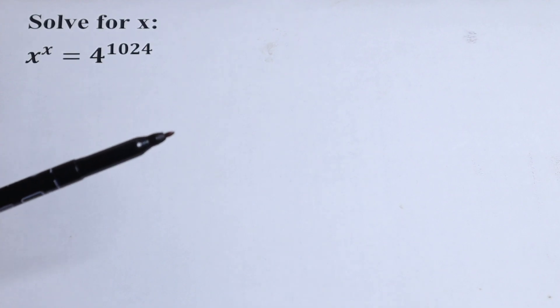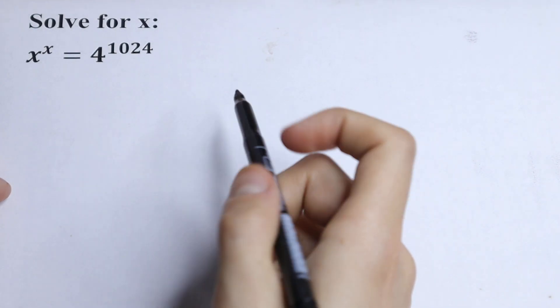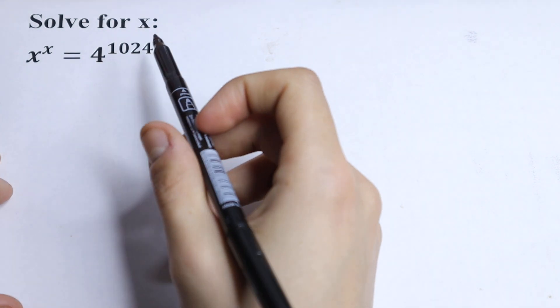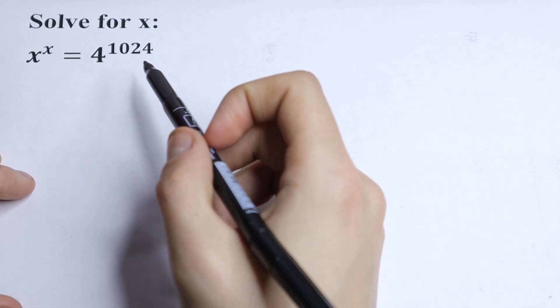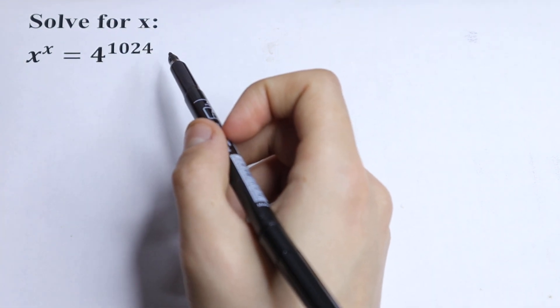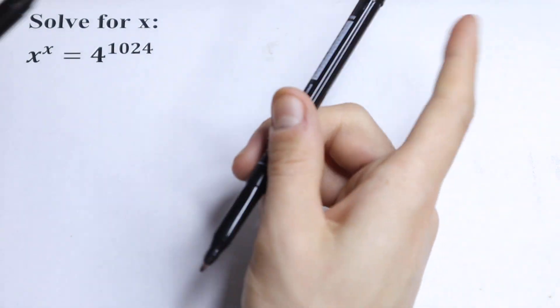Hello everyone! Interesting equation today: x to the power x equal to 4 to the power 1024. How can I solve this? Try to solve it by yourself. So let's try to solve it right now.